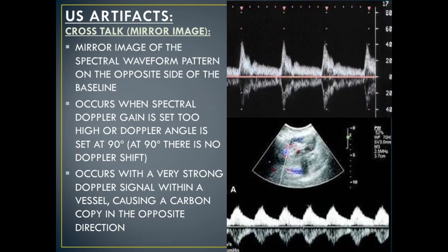The next type of ultrasound Doppler artifact is known as crosstalk, also called mirror image. This is a mirror image of the spectral waveform pattern, which shows up on the opposite side of the baseline. This occurs when the spectral Doppler gain is set too high, or the Doppler angle is set at 90 degrees. At 90 degrees, there is no Doppler shift. This also occurs with a very strong Doppler signal within a vessel, causing a carbon copy in the opposite direction.